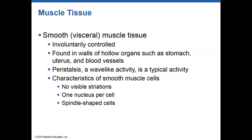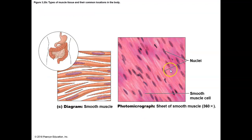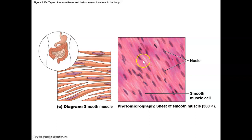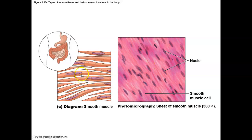Smooth muscle always has only one nucleus per cell, and the cells have a spindle shape. Here's smooth muscle — you can see that spindle shape for each cell. I always think of cat's eyes, except the nuclei are also elongated. It has that eye shape with a very elongate nucleus within each cell.